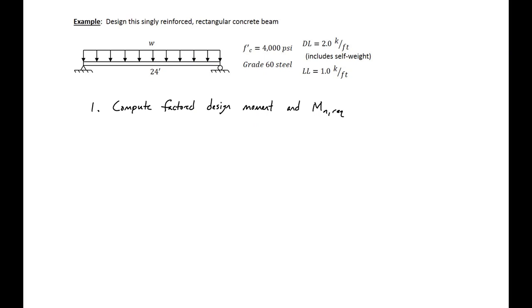In this example problem, we're going to design a singly reinforced rectangular concrete beam. It'll be simply supported and will have a span length of 24 feet and a distributed load. In this design we're given the distributed dead load and distributed live load, and we're told that the distributed load includes the self weight.